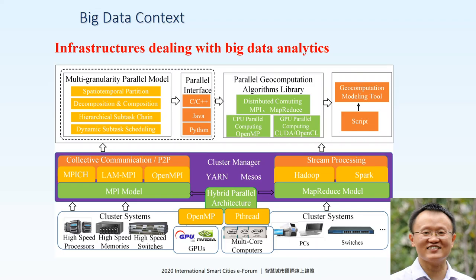We need to define the geospatial-specific parallel model. We also need to define the different parallel interfaces — C++, Java, Python. Then, based on various processing models, we develop a parallel geocomputation algorithm library. We can then use GIScript to glue these various algorithm processing libraries together.